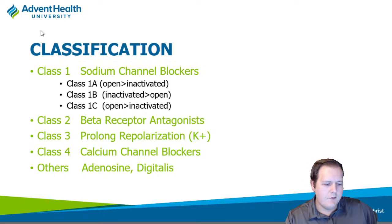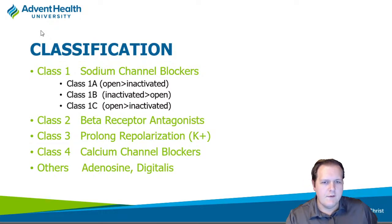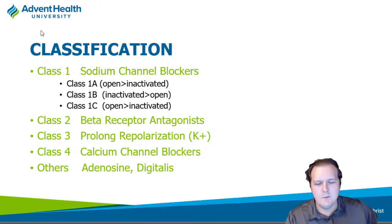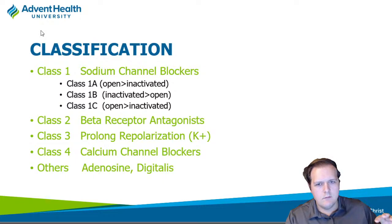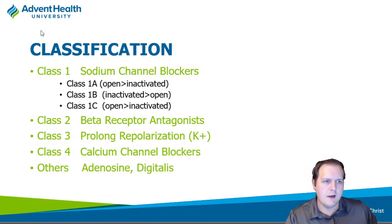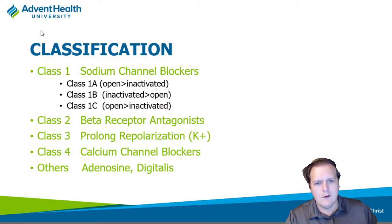Understanding what type of ion movement is happening at various stages of the action potential is critical to understanding how these drugs work. You can break these up into four main classes, plus a miscellaneous category. Class one are sodium channel blockers, mainly affecting phase zero in those fast response cells, blocking that rapid influx of sodium. Within class one, you can find three subcategories: 1A, 1B, and 1C, each with various activities at different states of the sodium channel — inactive, closed, and open.